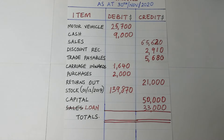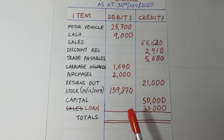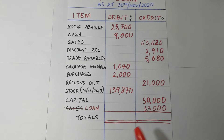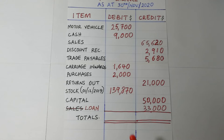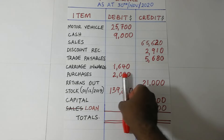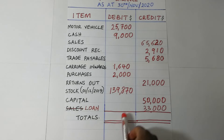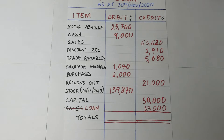So basically, that's how our trial balance looks. We go ahead and add up both the debit side and the credit side. If the double entry system was accurate, the debits should be equal to the credits as revealed in the totals. So we add them up and that is what we get.